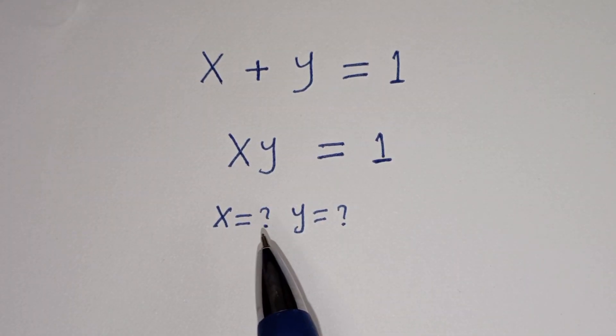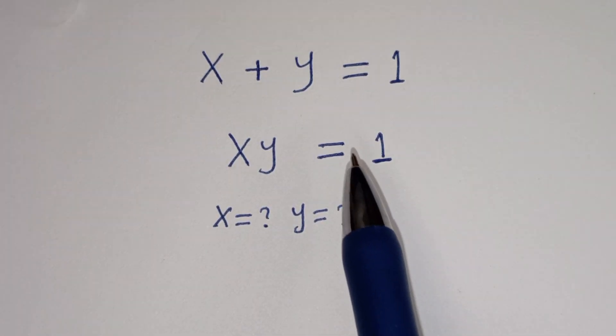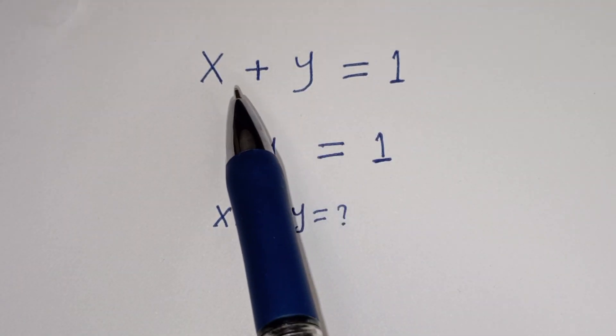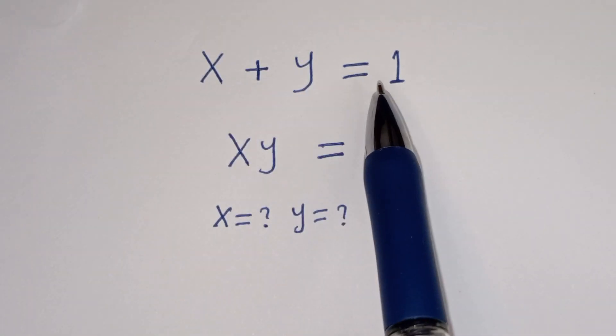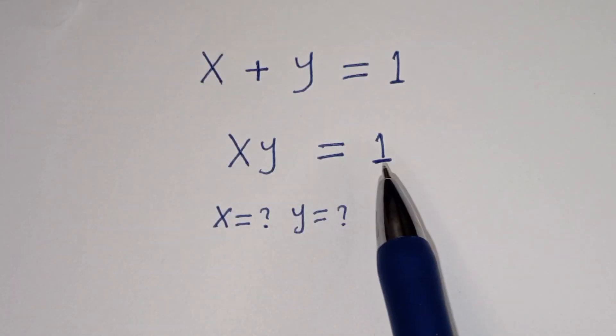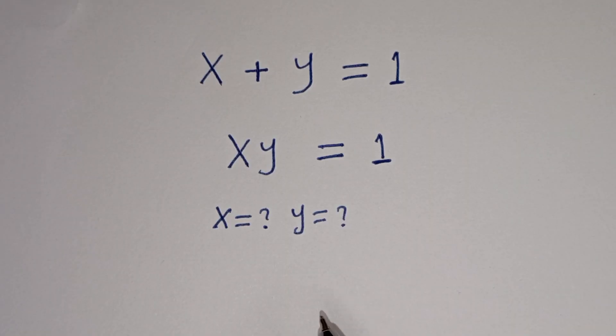Hello. How to solve for x and y in this equation: x plus y is equal to 1, and x times y is equal to 1.